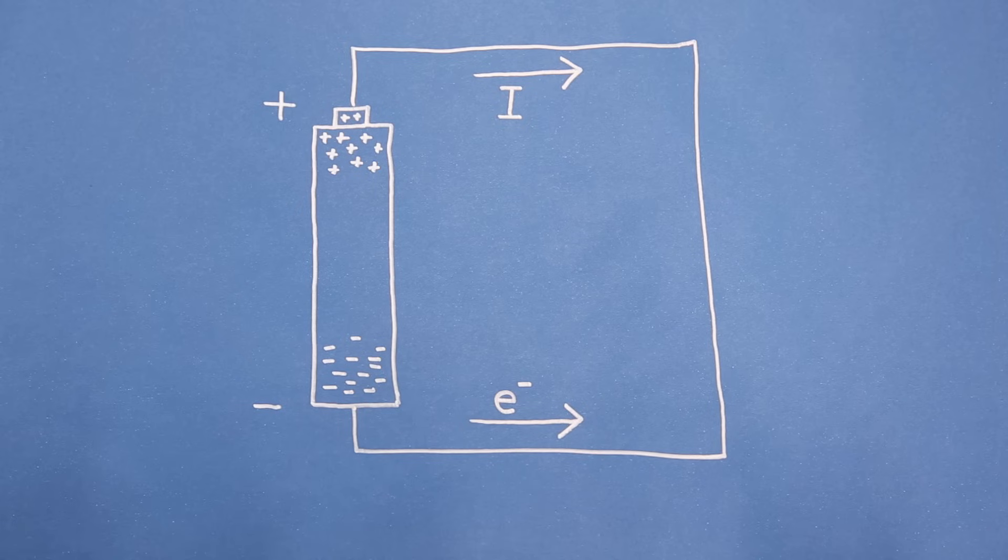Don't worry, the math still works out as long as we stick with either electron flow or conventional current. And since most electronics textbooks use conventional current, we'll go with that.